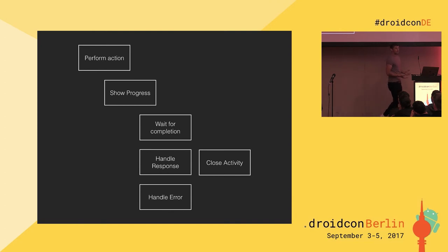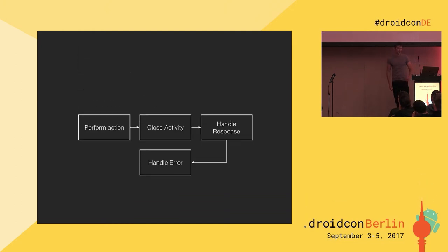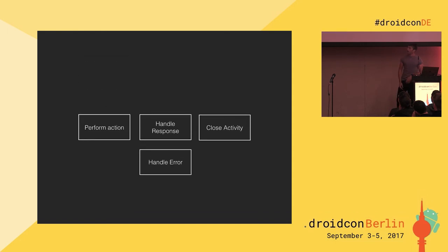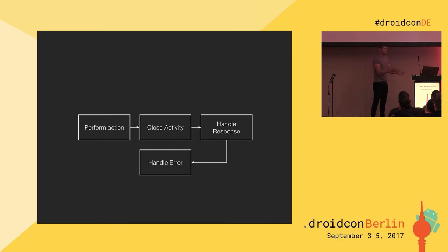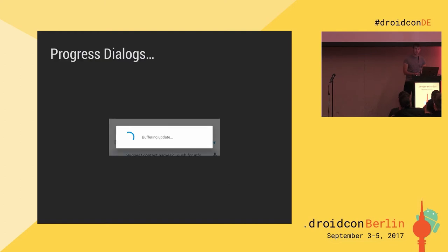What we want to do here to remove this pessimism from this flow is get rid of that progress dialogue and remove the waiting from that flow. So we perform an action, and then we need to move on to the next step, which is closing the activity. As soon as we perform that action, we want to close that activity and handle the response once that screen is out of the way, and the user is free to do what they want.